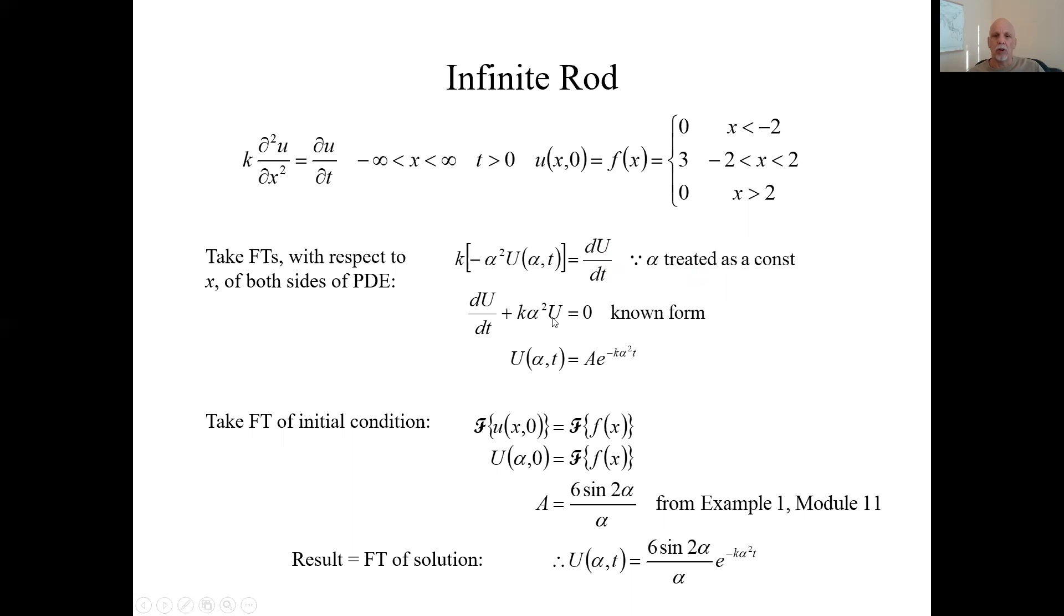Now we can rearrange terms. Pull all this stuff to one side, set it to zero. Then we have dU plus k alpha squared U. This is an ordinary differential equation in big U. And we know its solution. This is just a first order equation. So that means big U, which is a function of alpha now, is this format. This is the general solution to this kind of equation.